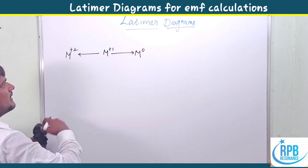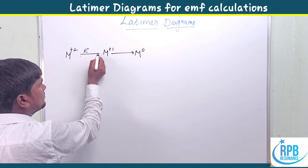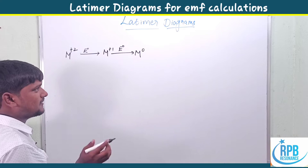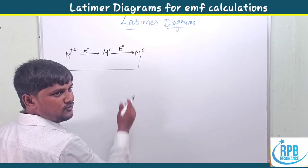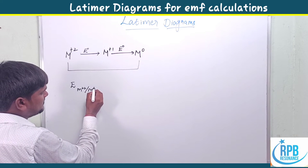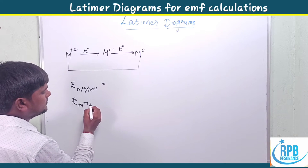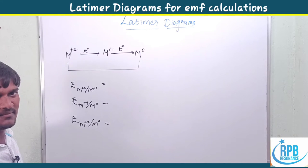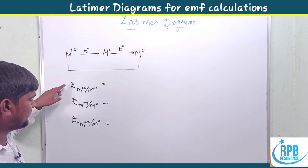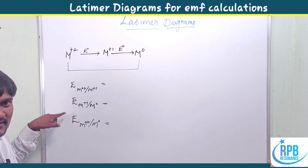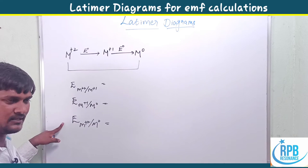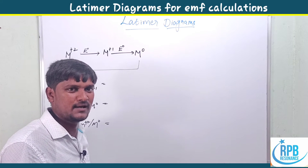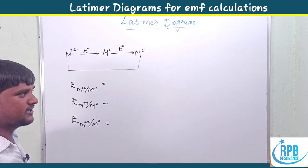In these types of problems, values are given from +2 to +1 and from +1 to 0, each with a certain E value. The question asks for the EMF from M²⁺ to M⁰. Sometimes two values are given and you find the third, or the first and third are given and you find the middle one. These types of questions appear in competitive exams like CSIR, GATE, and JEE.